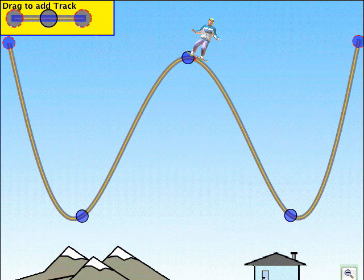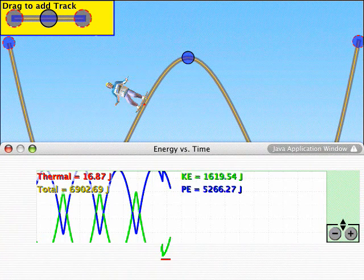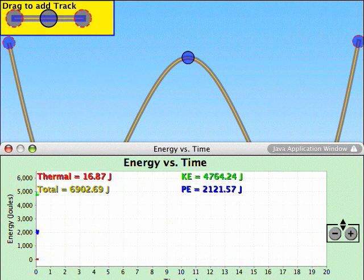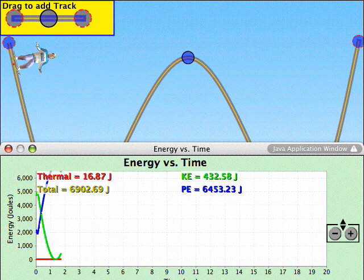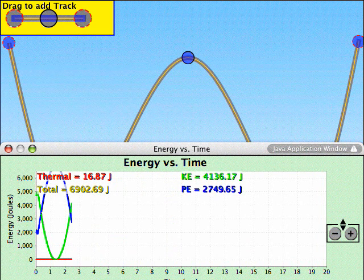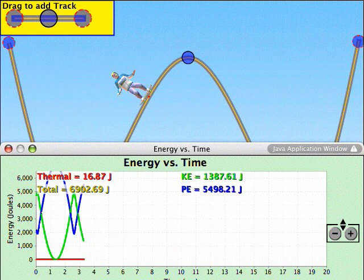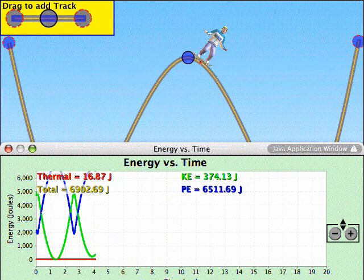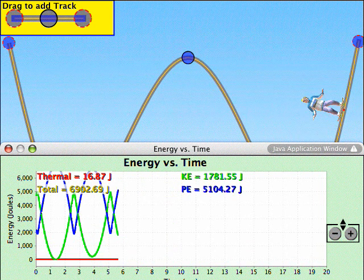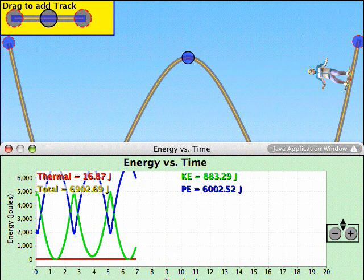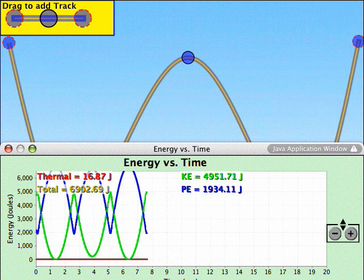The final graph is an energy versus time graph. And in this, we can see cycle after cycle. We can see the repetitive nature of the graph. And with a larger graph, we would see the total energy remaining the same at 6900 joules.